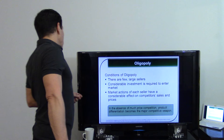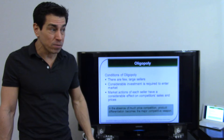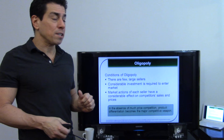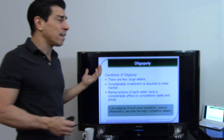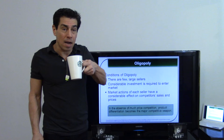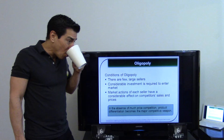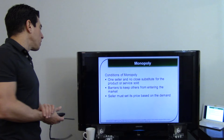An oligopoly involves few, very large sellers with considerable investment required — think of the cereal market: Post, Kellogg's, and General Mills. They can dominate the market and compete intensely — like Fruity Pebbles and Trix going on sale against each other. The airline industry and car companies like GM and Chrysler are also examples. A monopoly has one seller with no close substitutes and high barriers to entry.